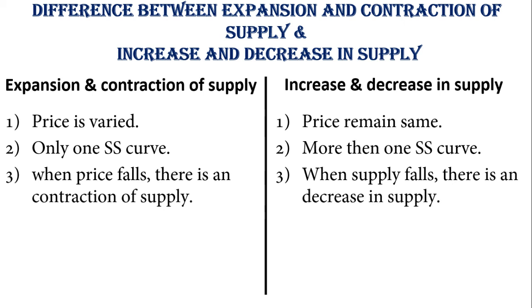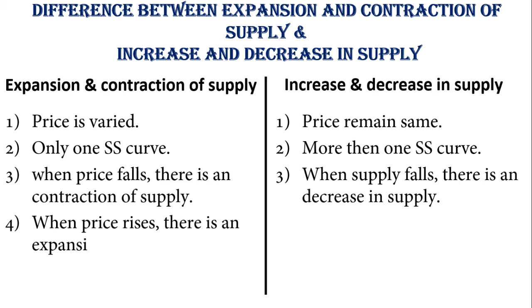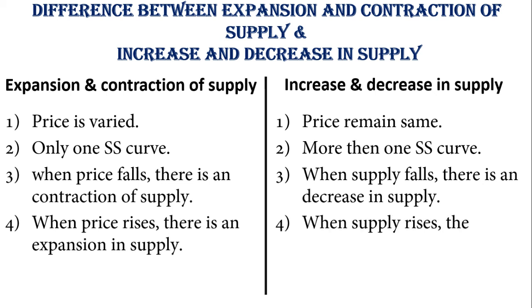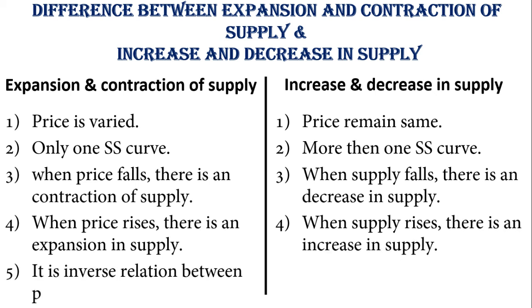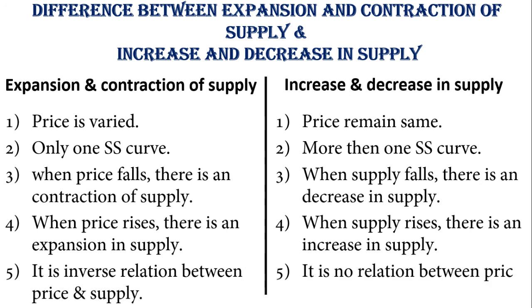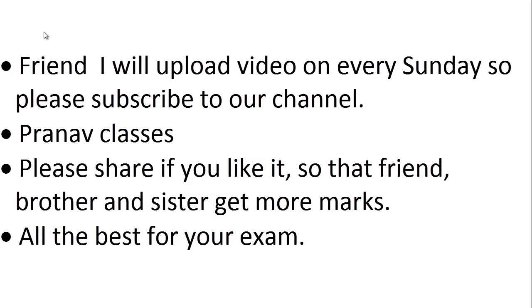When price falls there is a contraction of supply, whereas when supply falls there is a decrease in supply. Similarly, when price rises there is an expansion in supply, and when supply rises there is an increase in supply. In expansion and contraction it is a price relationship, whereas in increase and decrease in supply there is no direct relationship with price.